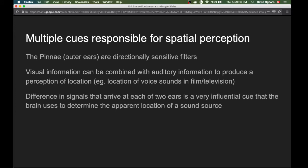However, it's the difference in signals that arrive at each of two ears that is probably the most influential cue that our brain and body uses to determine the apparent location of a sound source.